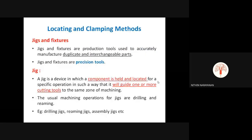Jigs and fixtures are two different devices. A jig is a device in which a component is located for a specific operation in such a way that it will guide one or more cutting tools to the correct position. Jigs are used to locate or clamp the workpiece, and at the same time, they also guide one or more cutting tools — so they have two functions.